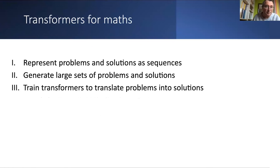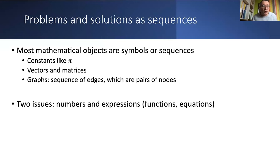When you want to solve a math problem with a transformer, you need to do three things. First, represent the problems and solutions as sequences in some language the model can translate. Second, generate large sets of problems and solutions to train the machine. And finally, train the model to translate — which is actually the easiest part.